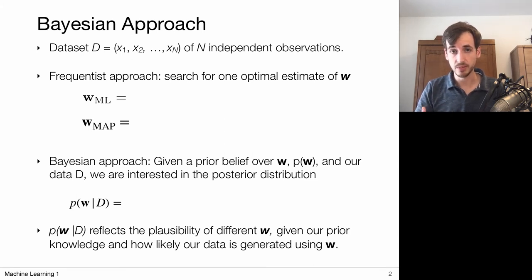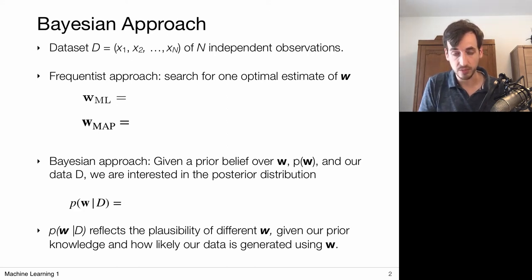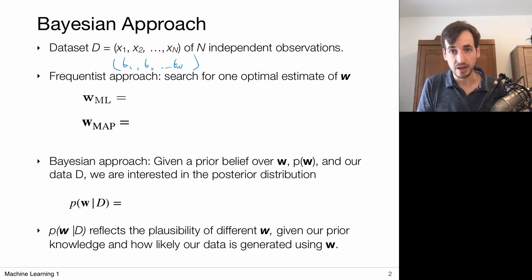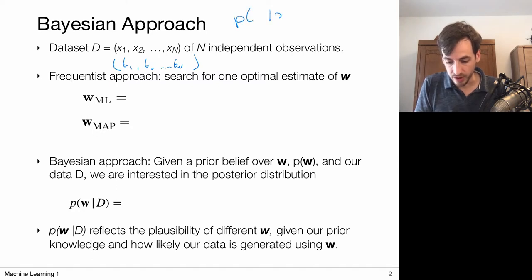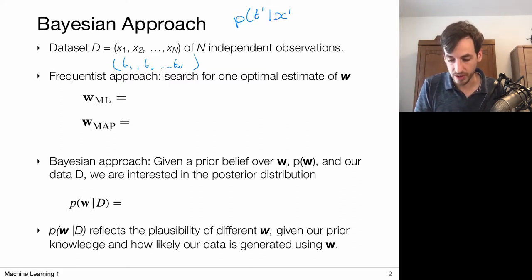The setting is: we have a dataset of independent observations, and we want to model this dataset with some probability distribution to be able to make predictions for the future. The dataset could consist of input points and corresponding target values. Given some input x, we want to predict the corresponding target, and we define probabilities for each of these targets. Such a predictive distribution is parameterized by a set of weights w and maybe some precision parameter beta.